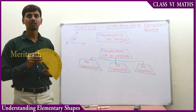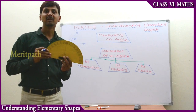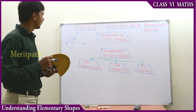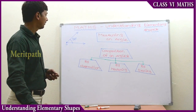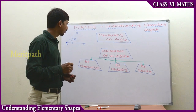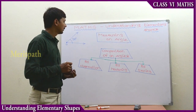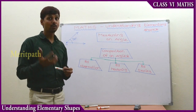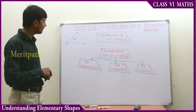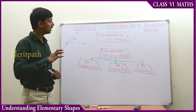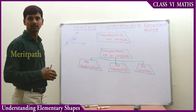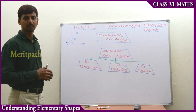This is the way to measure an angle using a protractor. So we have different ways to compare two angles: by observation, by measuring, and by tracing.